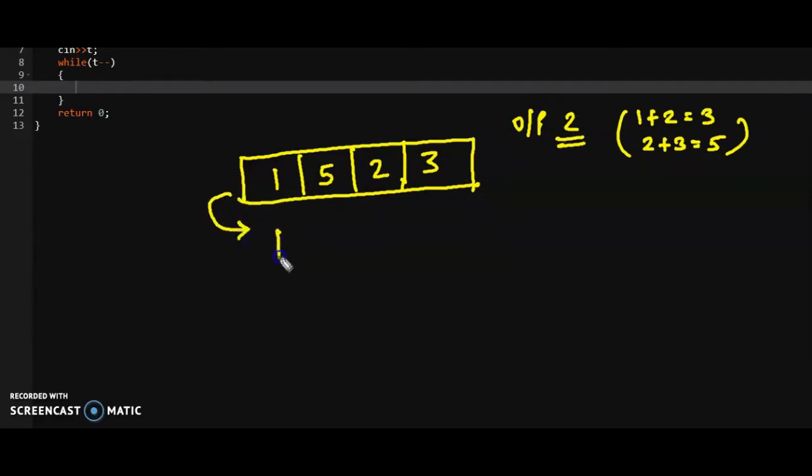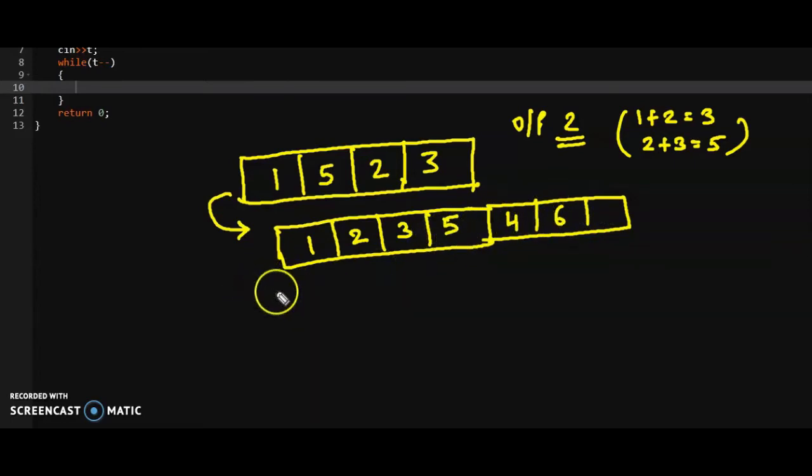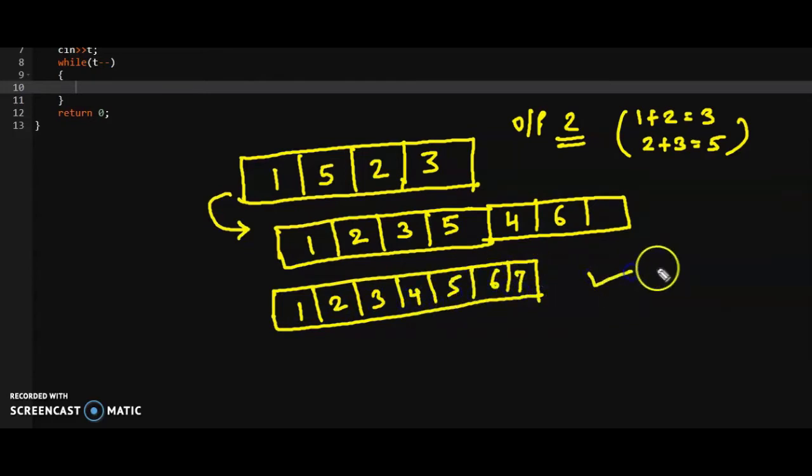So we have to find such type of triplets in this array. So what I will do first, I will sort this array. I am sorting this array. So 1, 2, 3, 5. And let's say some other numbers are also there. Let's say it's 4 here and 6. But we are sorting it. So let me make another array which is sorted. So 1, 2, 3, 4, 5, 6, 7. These are the numbers initially we have after sorting.